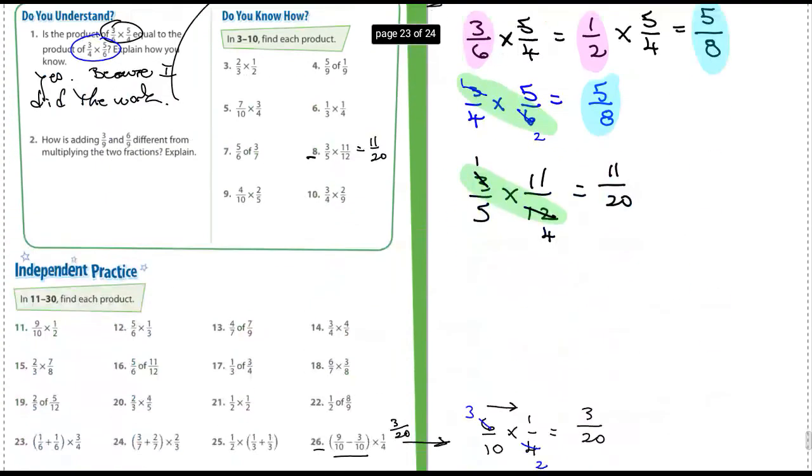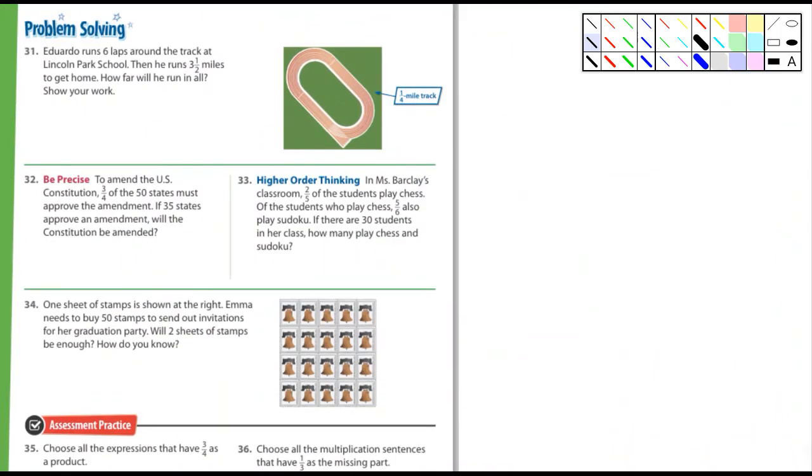Let's look at the next page, which is the problem-solving. Eduardo runs six laps around the track. At school, he runs three and a half miles to get home. How far will he run in all? It's a quarter-mile track. So first off, six laps. So it's going to be, the first part is going to be six times one-quarter. You know how to multiply whole numbers and fractions. That equals something. Whatever that something is, you're going to add to that three and one-half. That would be a great question on a test. I might throw that one in there. Keep that in mind.